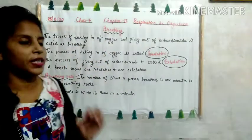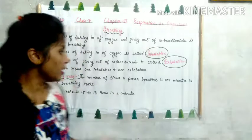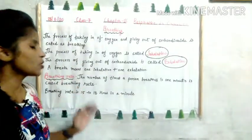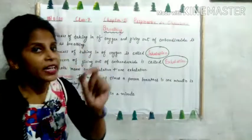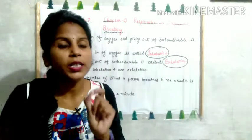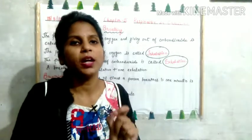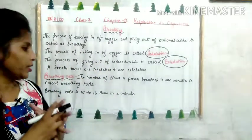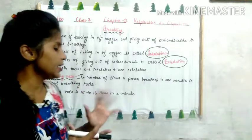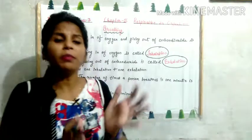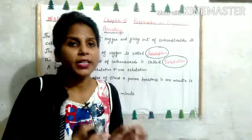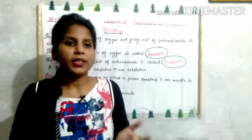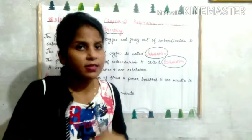Now, breathing rate. What is breathing rate? The number of times a person breathes in one minute is called the breathing rate. How many times a person breathes in one minute is the breathing rate. The normal breathing rate is 15 to 18 times per minute — so we breathe 15 to 18 times in one minute.